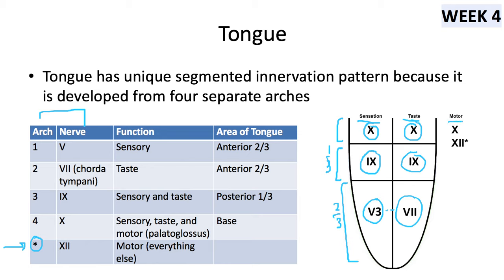For motor innervation of the tongue, the vagus nerve (CN X) innervates the palatoglossus — the only tongue muscle contributed by a pharyngeal arch — and is the only cranial nerve that covers all three modalities for the tongue. All remaining tongue muscles come from occipital somites and are innervated by CN XII, the hypoglossal nerve. We'll cover cranial nerves and tongue muscles in detail in separate videos.